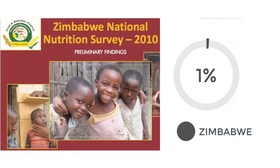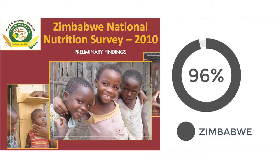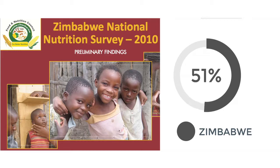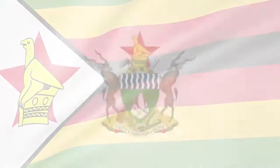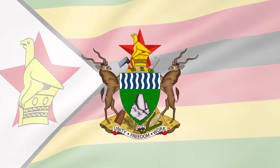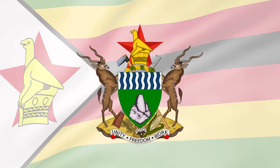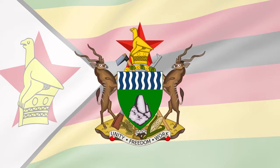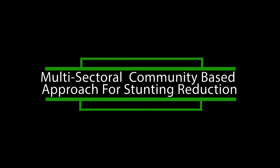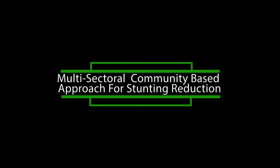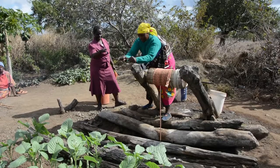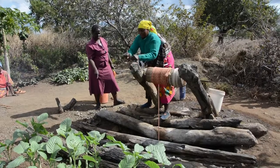According to the National Survey of 2010, about 34 percent of Zimbabweans are stunted. This high figure led the government to launch the multi-sectoral community-based model for stunting reduction, a program focusing on reducing food and nutrition security challenges in the region.